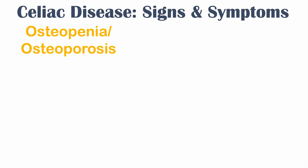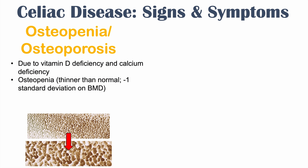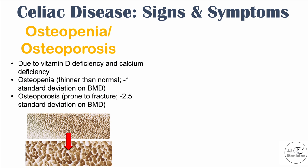Osteopenia and osteoporosis can develop in celiac disease patients, particularly later in life, due to vitamin D and calcium deficiency. Osteopenia means bones are thinner than normal, detectable on a bone mineral density scan. Osteoporosis means bones have become so thin they are fragile and prone to fracturing — for example, if an older patient falls and fractures their femur, that is an automatic diagnosis of osteoporosis.